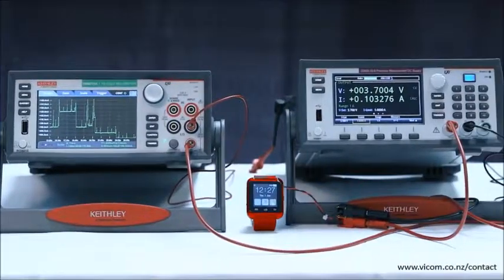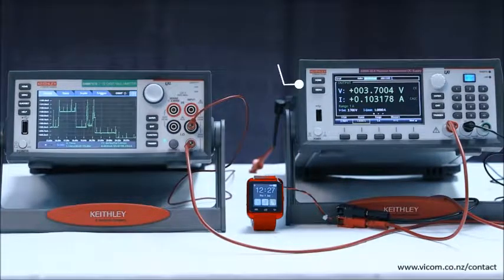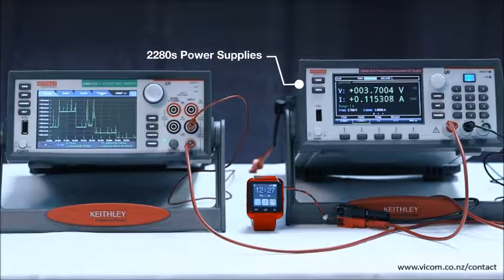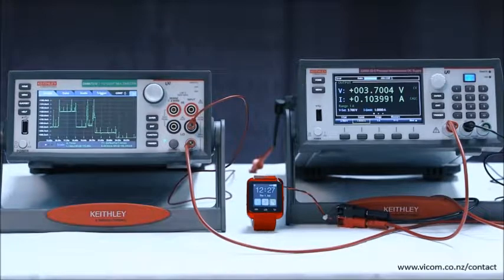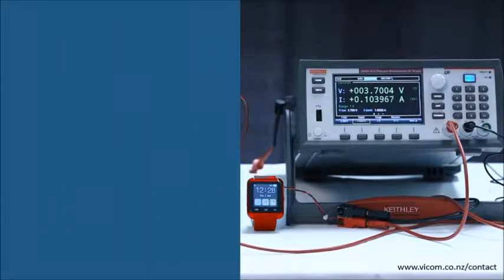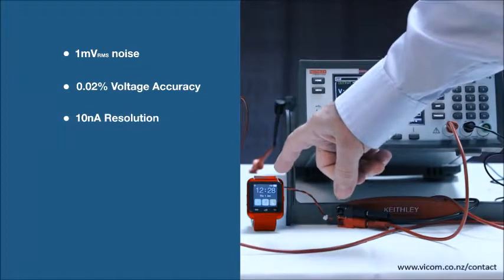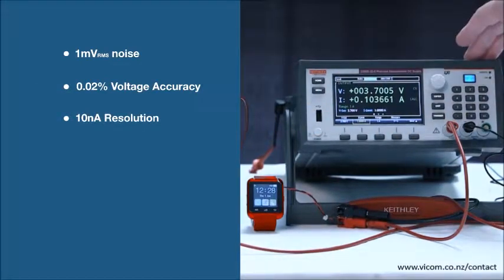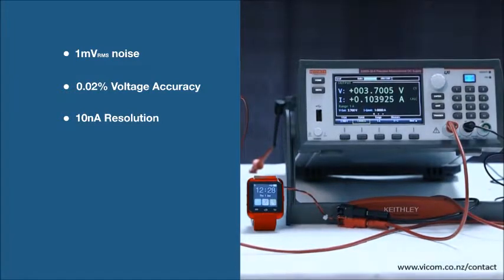Test your designs with clean, easily controlled, and accurate voltage. The 2280S Precision Measurement Programmable DC Power Supplies are linear supplies which minimize noise and have high-accuracy and high-resolution monitoring. This enables you to emulate the full range of battery voltages that will power your device and accurately determine the device's shutdown voltage.